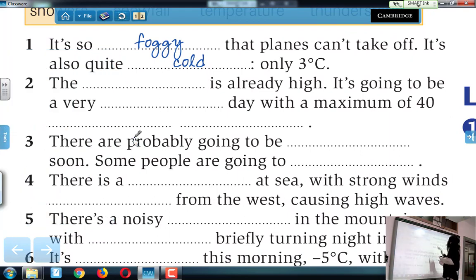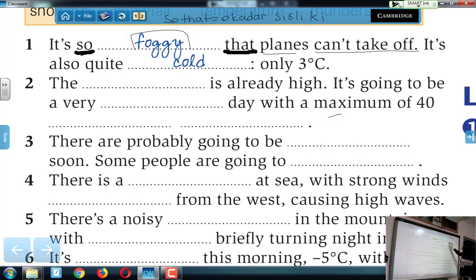Burada ne diyor? It is so foggy that planes can't take off. It's also quite cold. Only 3 degrees centigrade. Now, look at so and that. Şimdi bu iki ifade arasına bir sıfat girdiği zaman so that o kadar bla bla ki anlamını verir. E burada da foggy var. O kadar sisli ki It is so foggy that planes can't take off. Uçaklar ne yapamıyor? Kalkamıyor. Can't take off. Kalkamıyor.